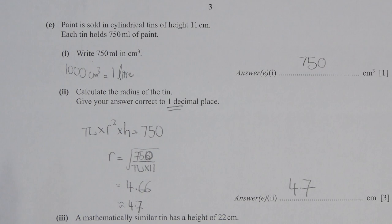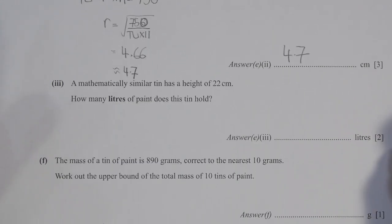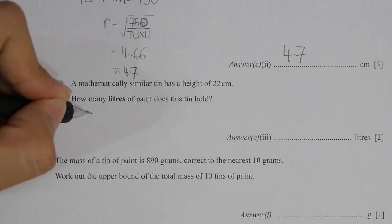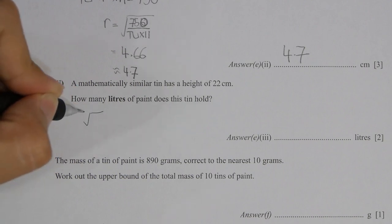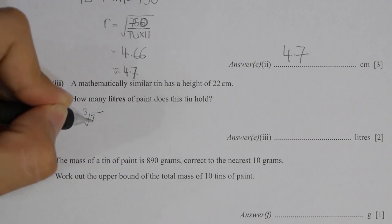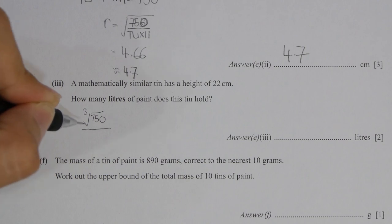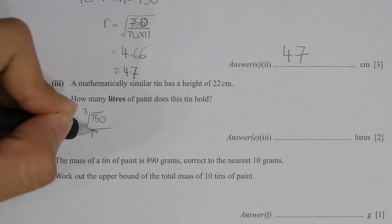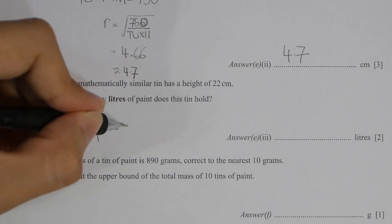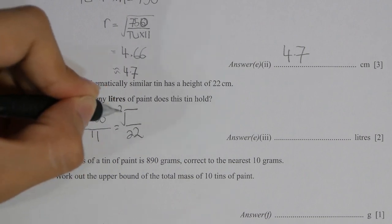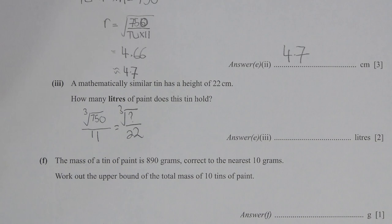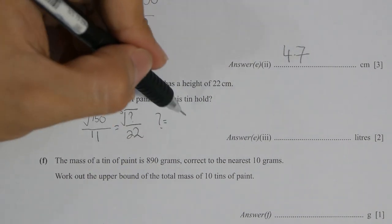For part F, the keyword is mathematically similar. So I took the cube root of 750 over 11 equals the cube root of the unknown over 22. By running the rearrangement and calculation, I get 6 liters as the final answer.